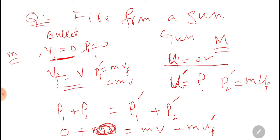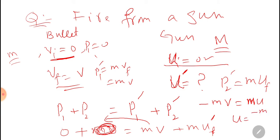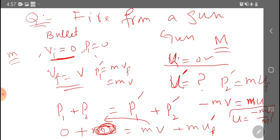When transferred to this side it will become negative: mv divided by M (mass of gun). So velocity of gun u equals minus mv divided by capital M.